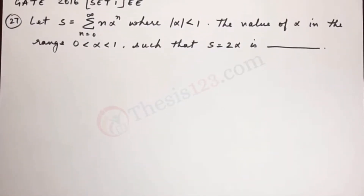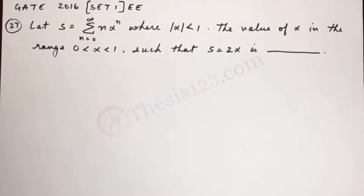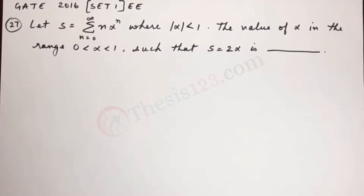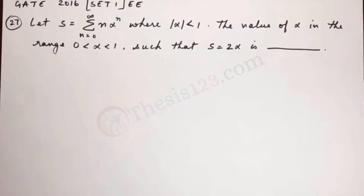Here's the next question. Let S equal the summation from n equals 0 to infinity of n times alpha to the power n, where the modulus of alpha is less than 1. Find the value of alpha in the range from 0 to 1 such that S equals 2 alpha.